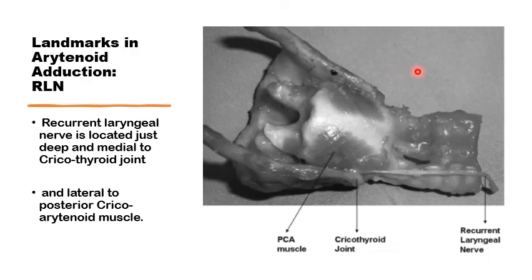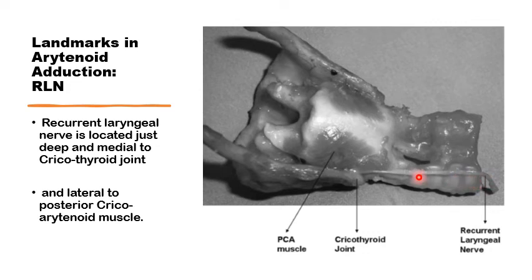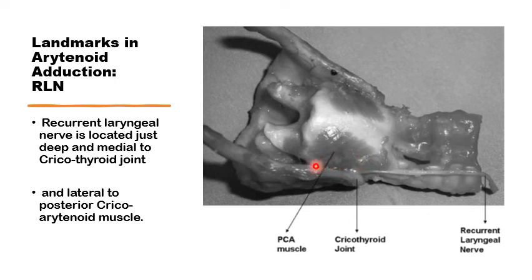Three important structures come quite close to the muscular process and must be identified and avoided in this surgery. The first is the recurrent laryngeal nerve, which courses from outside the larynx deep to the cricothyroid joint to form the inferior laryngeal nerve. It crosses the fibers of the posterior cricoarytenoid and will be quite close to the posterior part of the muscular process.